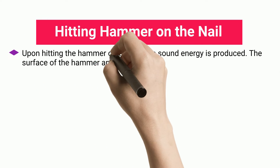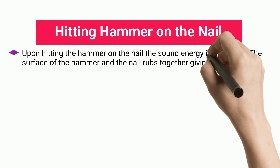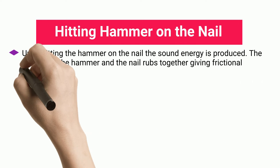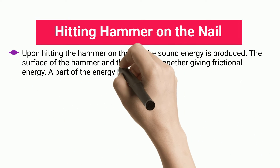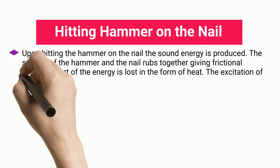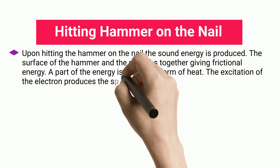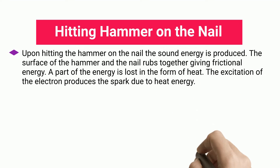Hitting hammer on the nail: Upon hitting the hammer on the nail, sound energy is produced. The surface of the hammer and the nail rub together, giving frictional energy. A part of the energy is lost in the form of heat, and the excitation of electrons produces a spark due to heat energy.